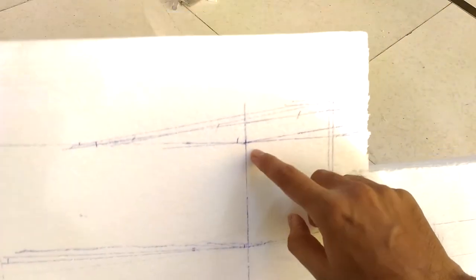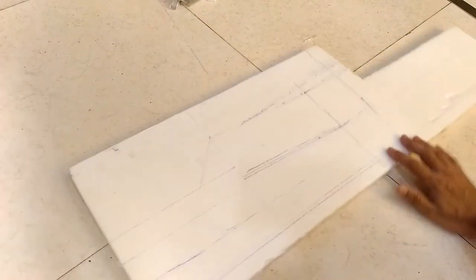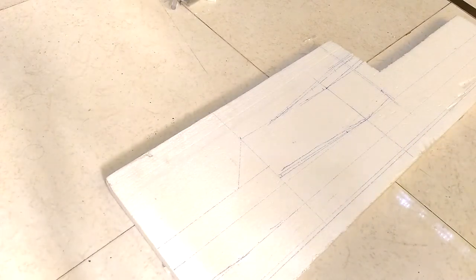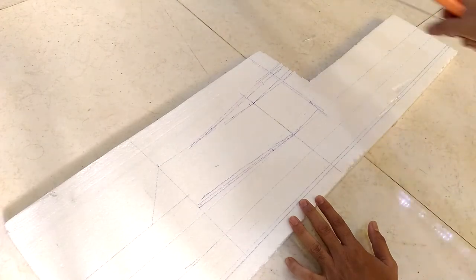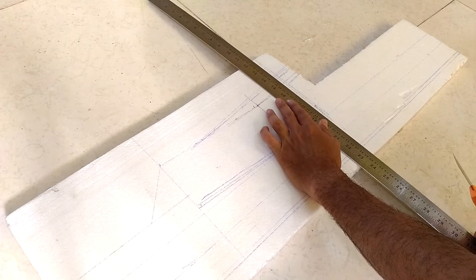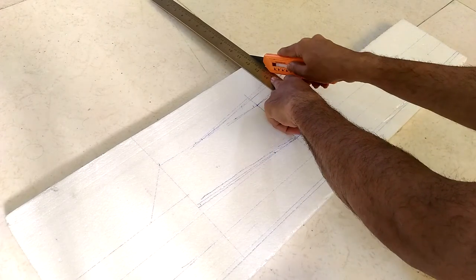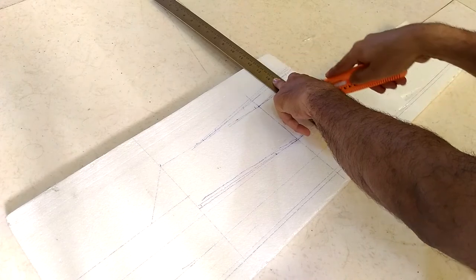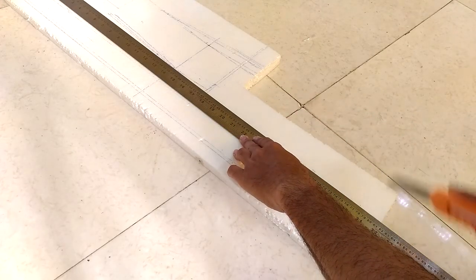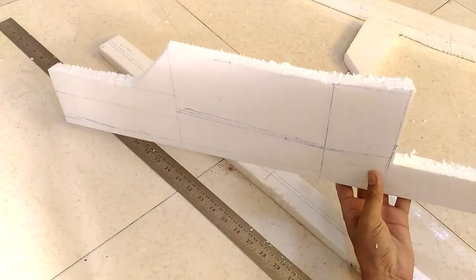So I have drawn this fuselage design on the foam board. This is the motor mounting part with a down thrust. This is the tail section. And the 1 inch foam is used for fuselage. So here I am cutting the foam. It always helps to use a straight edge. So here is the fuselage after cutting.